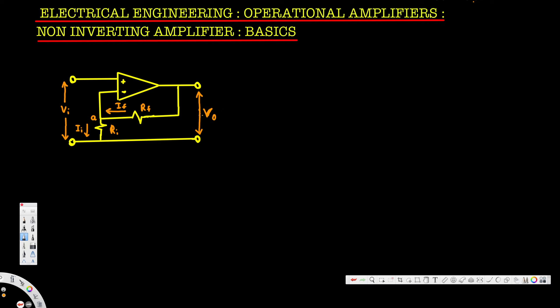Now to find out the voltage output, we can apply Kirchhoff's Current Law at this node. For an op amplifier, we know that voltage at the positive terminal is equal to voltage at the negative terminal. Also, we have to know that current through the positive and negative terminal is always going to be zero. So whatever current is going through this node should be equal to this one, because the current through this terminal is equal to zero.